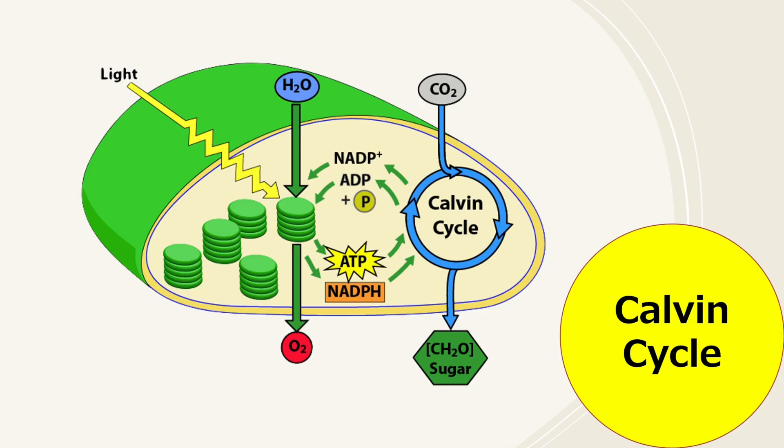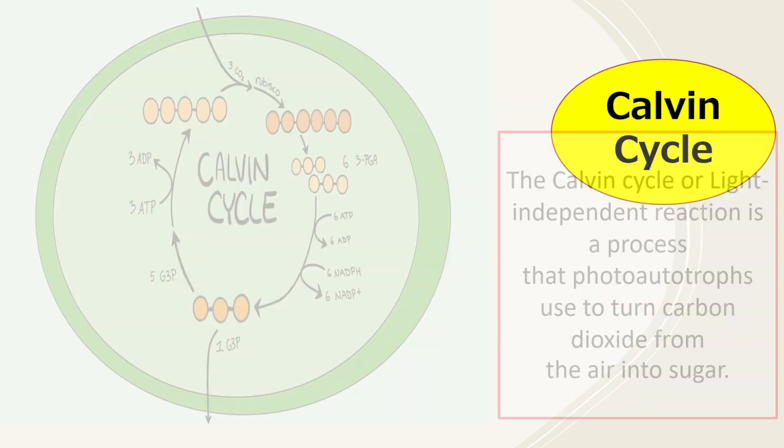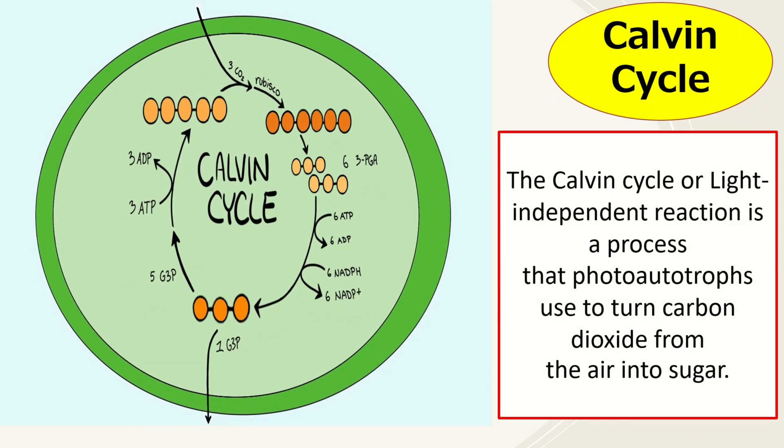Calvin Cycle, also known as the Light Independent Reaction. This is the opposite of Light Dependent Reaction because in this process, light is no longer needed.